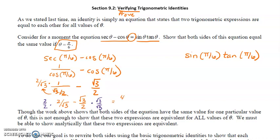2 times 2 is 4, and 2 times √3 is 2√3 for the denominator. For the other fraction, √3 times √3 is 3, with the common denominator 2√3. Now that denominators are common, we subtract the tops: 4 minus 3 gives 1. So the left-hand side simplifies to 1 over 2√3. You could rationalize to remove the square root in the denominator, but for now we just need to check if the two sides are equal.